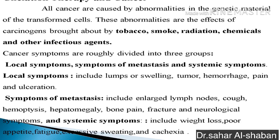Cancer is caused by abnormalities in the genetic material of transformed cells. These abnormalities are the effect of carcinogens brought about by tobacco smoke, radiation, chemicals, and other infectious agents. Cancer symptoms are broadly divided into three groups: local symptoms, metastatic symptoms, and systemic symptoms. Systemic symptoms include weight loss, loss of appetite, fatigue, etc.